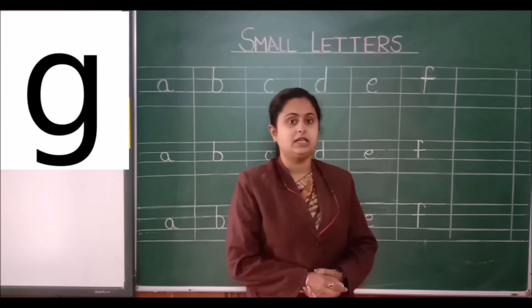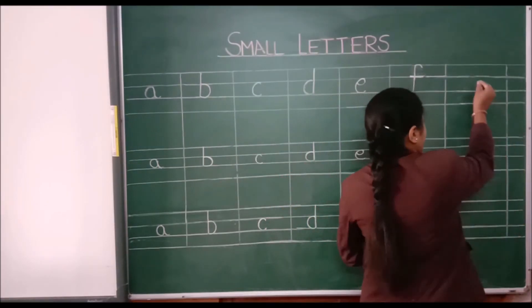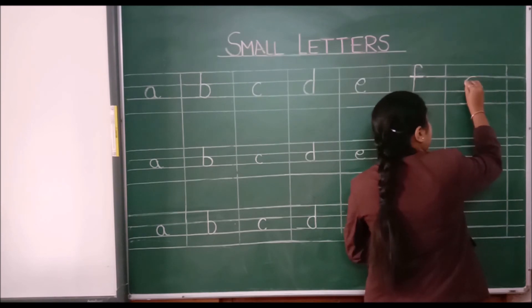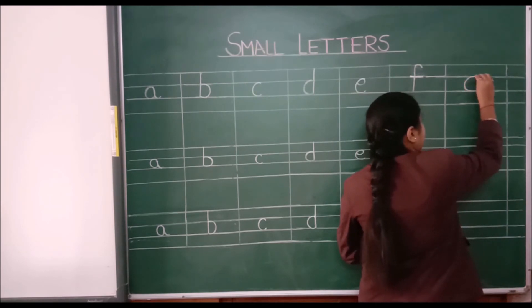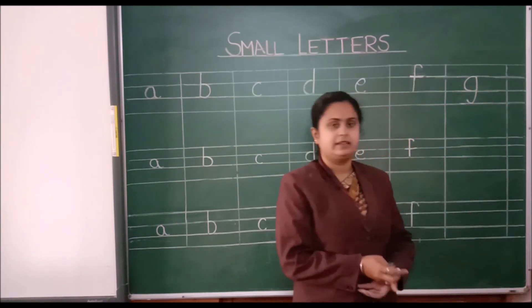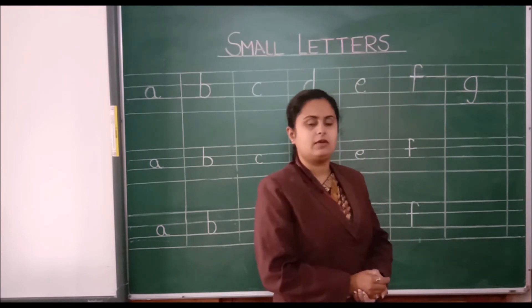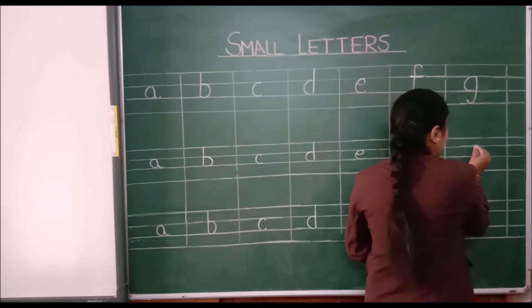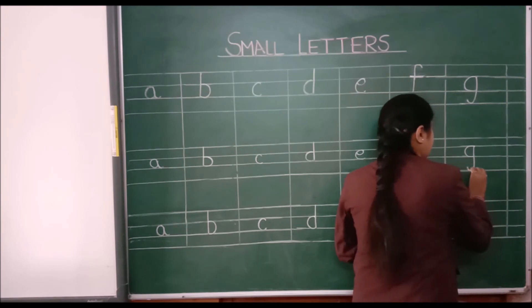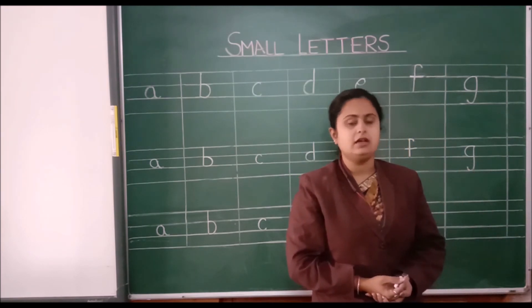After F, what will come — letter G. To write letter G, you have to make a curve, then a standing line like this and make it like this. Once again, you have to make a curve like this, then a standing line, and make a curve like this.